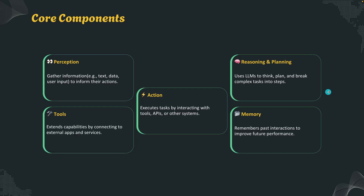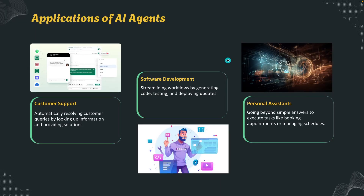These are some real world applications, and this is where things get exciting. First, customer support — agents can automatically resolve queries by looking up answers, analyzing tickets and replying 24/7. Then software development — imagine an agent that writes tests and deploys code updates automatically. You may have seen ChatGPT's Codex or GitHub Copilot, where the agent automatically writes code and creates a pull request for you. And personal assistance — agents can schedule meetings, book appointments, or handle emails while you sleep. These are not futuristic ideas; they are happening today, and companies are hiring engineers who can design and deploy these agentic systems right now.